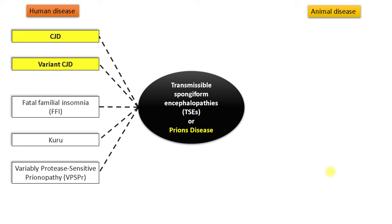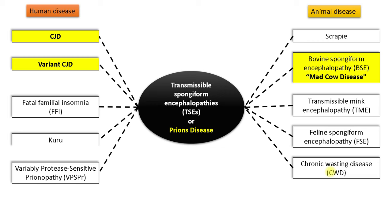There are many types of TSE. It affects both humans and animals. Human diseases include CJD, variant CJD, fatal familial insomnia, Kuru, variably protease-sensitive prionopathy, etc. Some animal diseases are scrapie, bovine spongiform encephalopathy, mad cow disease, and other encephalopathies.